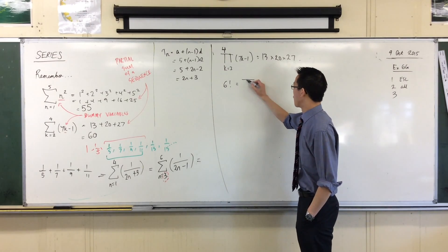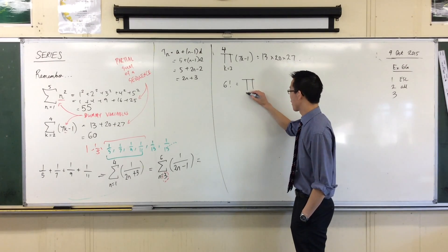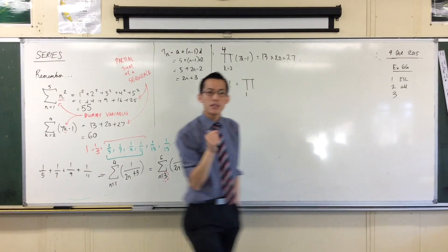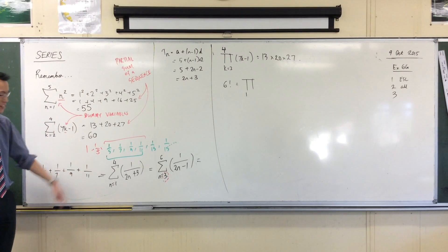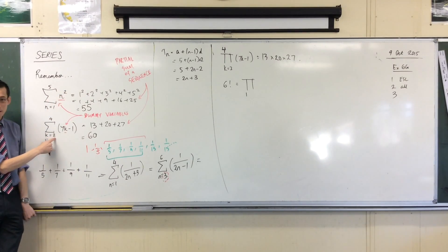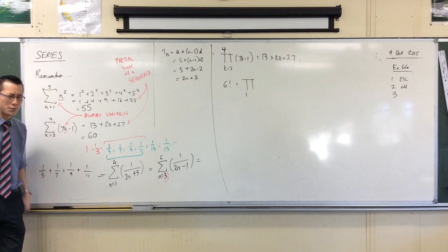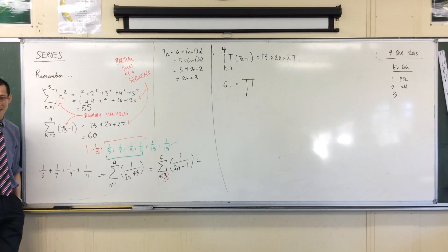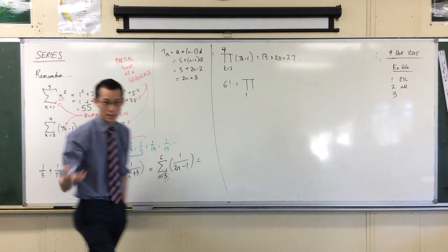6 minus 5. I would say, okay, firstly it's a product. Where would you like to start? K equals 6. Be careful, right? Built into both sigma and pi notation is that you start from here and you go up to here.